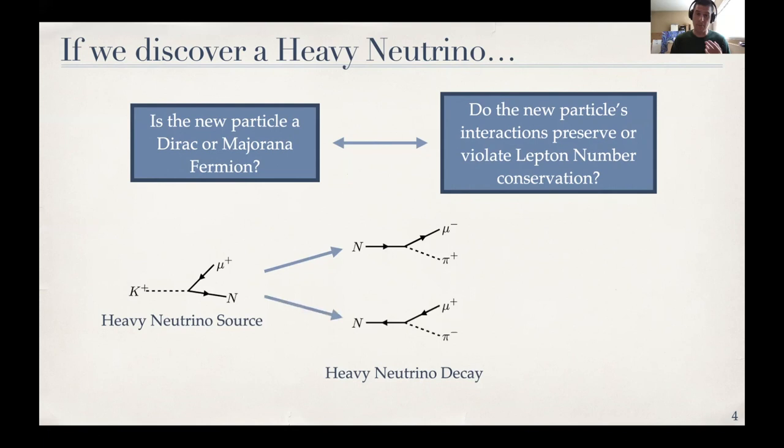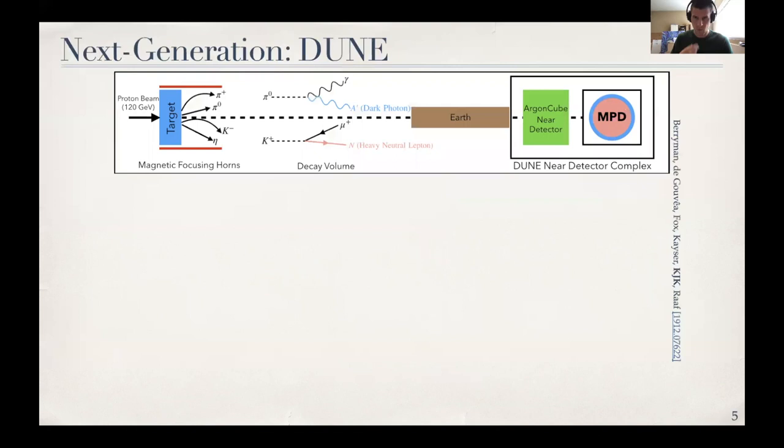However, if N is a Majorana fermion, then its decays can violate lepton number. And then N coming from this K plus source can decay instead to a mu plus and a pi minus. In fact, if N is a Majorana fermion, this second process will happen with equal probability to the first one. So if we have this perfectly characterized source of only positively charged kaons, then we have a prediction. If N is a Dirac fermion, we should only see final states of decays with a mu minus and a pi plus. Whereas if N is a Majorana fermion, we should see equal rates with mu minuses and mu pluses in the final state. And so if we are lucky enough to detect one of these Ns, we can try to measure these two chains and see whether they happen with equal probability or not to determine the character of the N.